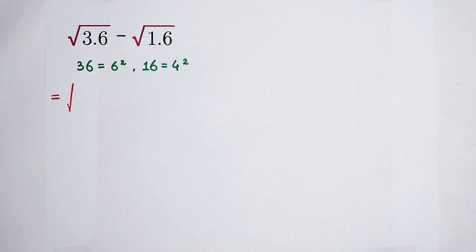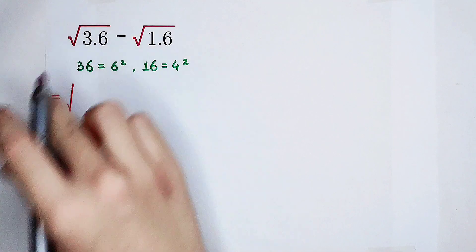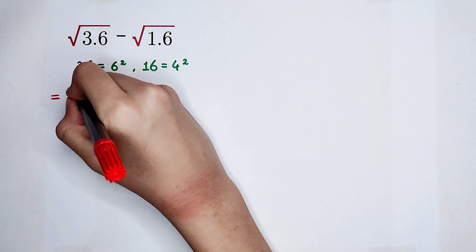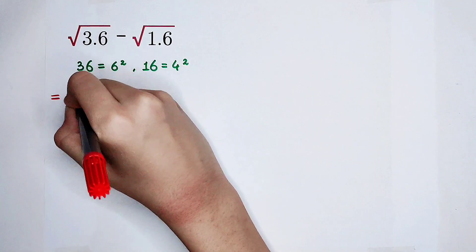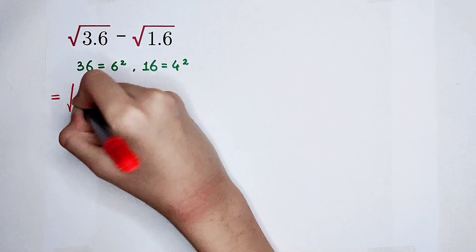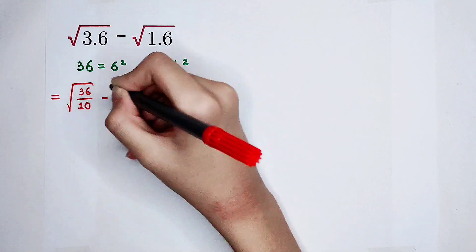For our first step, of course, I'm going to write this 3.6 as 36, then divide it by 10, minus.